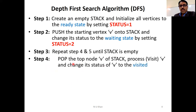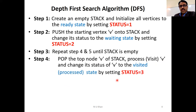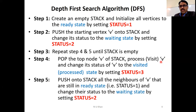Step three: repeat steps four and five until the stack is empty. Step four: pop the top node from the stack, visit it, and change the status to visited state by setting the flag value to three. Step five: push onto the stack all the neighbors of the popped vertex V that are still in the ready state — those with flag value one — and change their status to the waiting state by setting status equal to two.